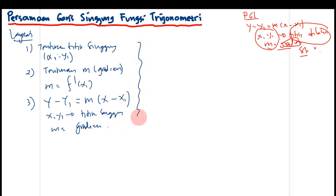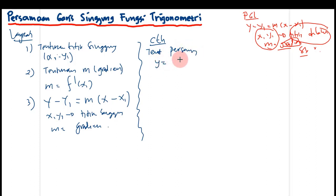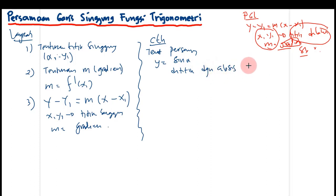Sampai di sini masih bisa diikuti ya. Misalnya, saya buat contohnya begini: tentukanlah persamaan garis singgung Y sama dengan sinus X di titik dengan absis X sama dengan pi per dua. Mengikuti langkah yang ada di sini.